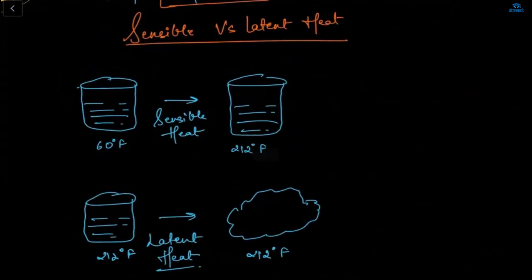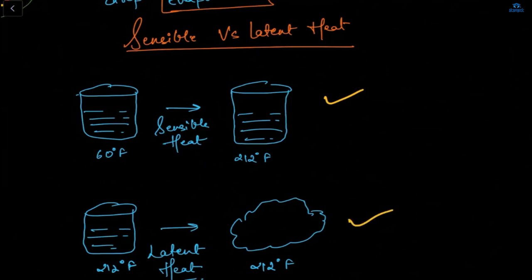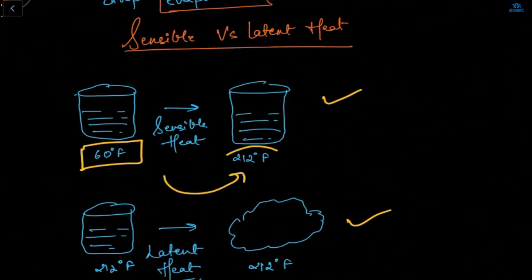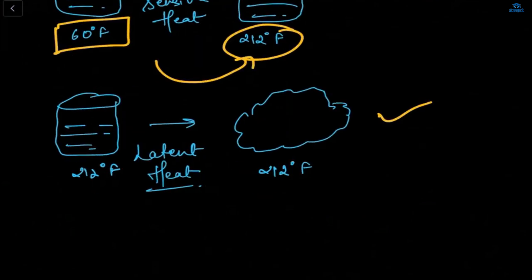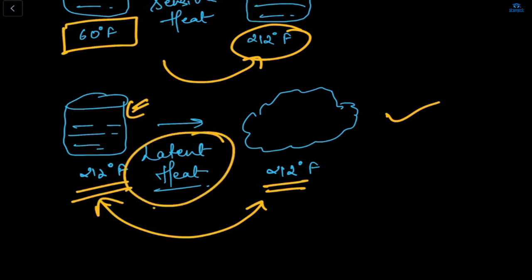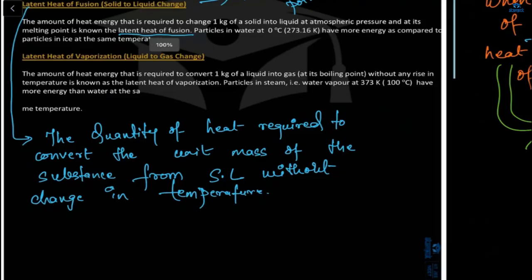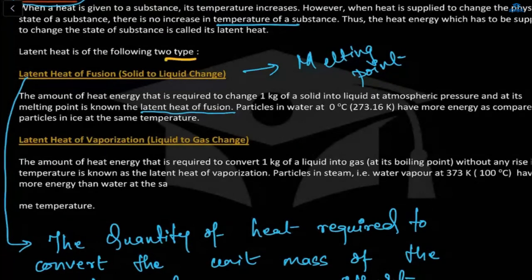Looking at the diagram: this is sensible heat and this is latent heat. With sensible heat, if I heat a beaker from 60 degrees Fahrenheit, it increases to 212 degrees Fahrenheit. With latent heat, I am boiling the water and it converts into water vapor — the temperature on this side is constant. This is the phenomenon of latent heat: it changes the state of matter without increasing the temperature.